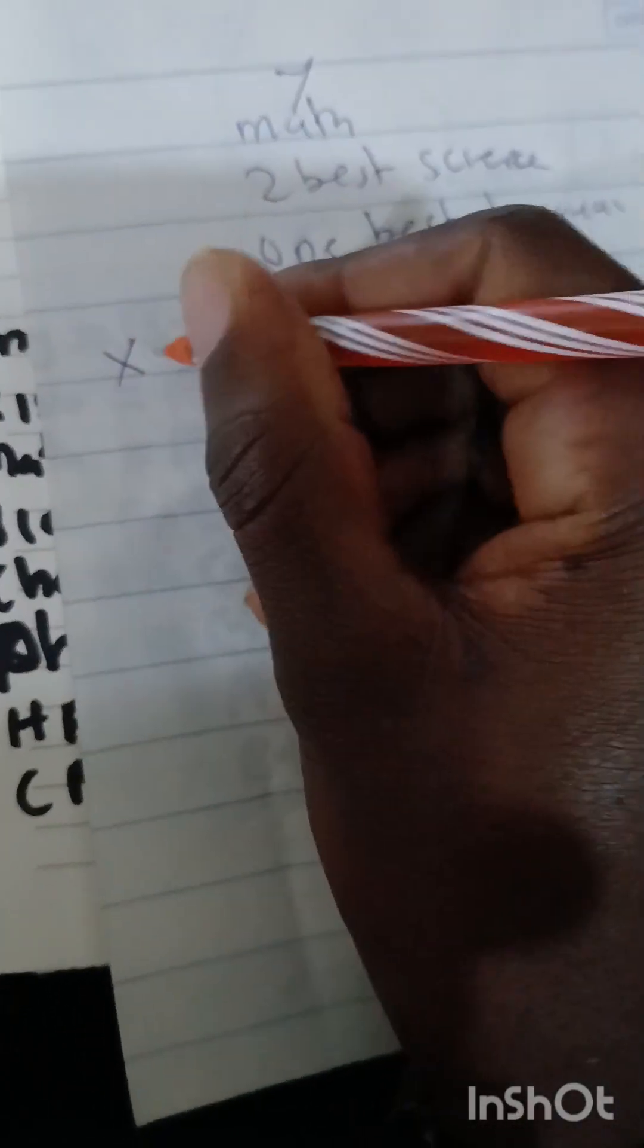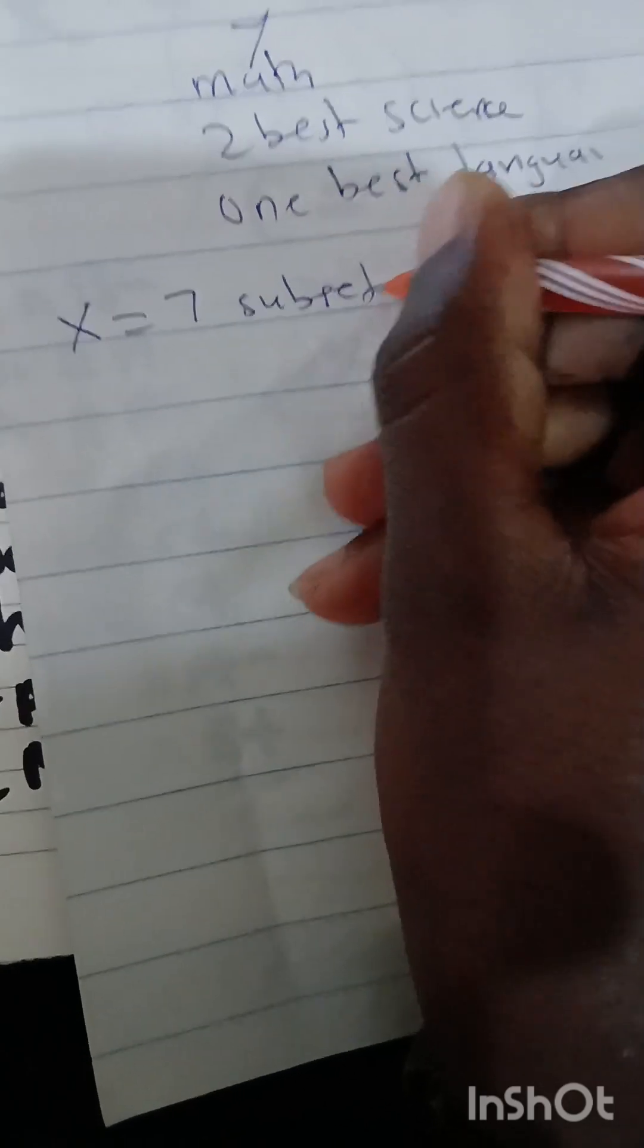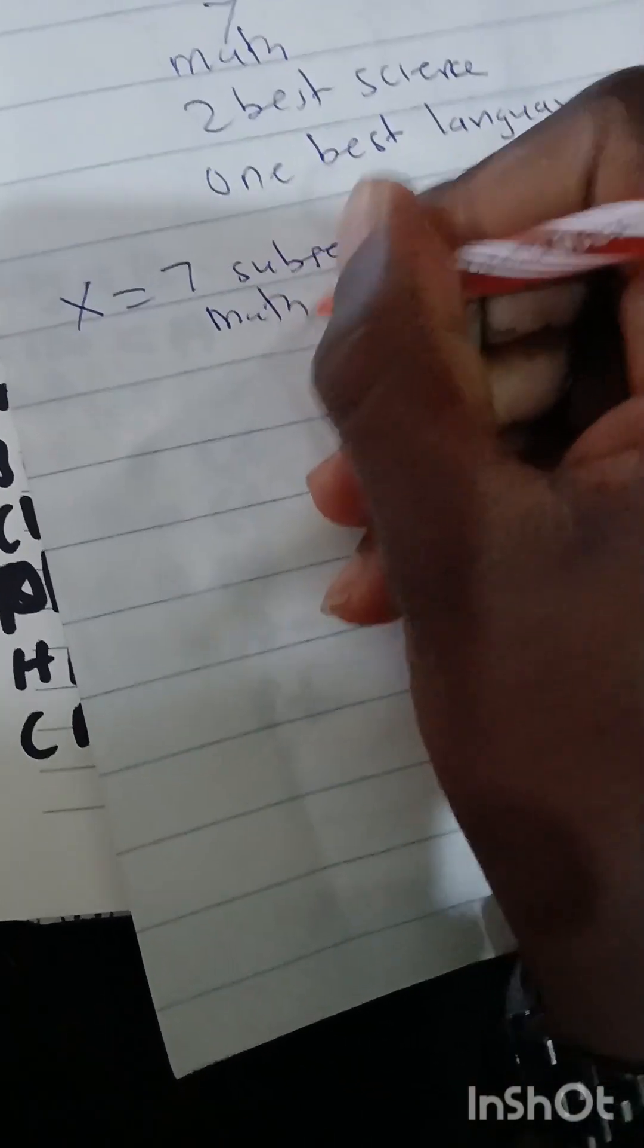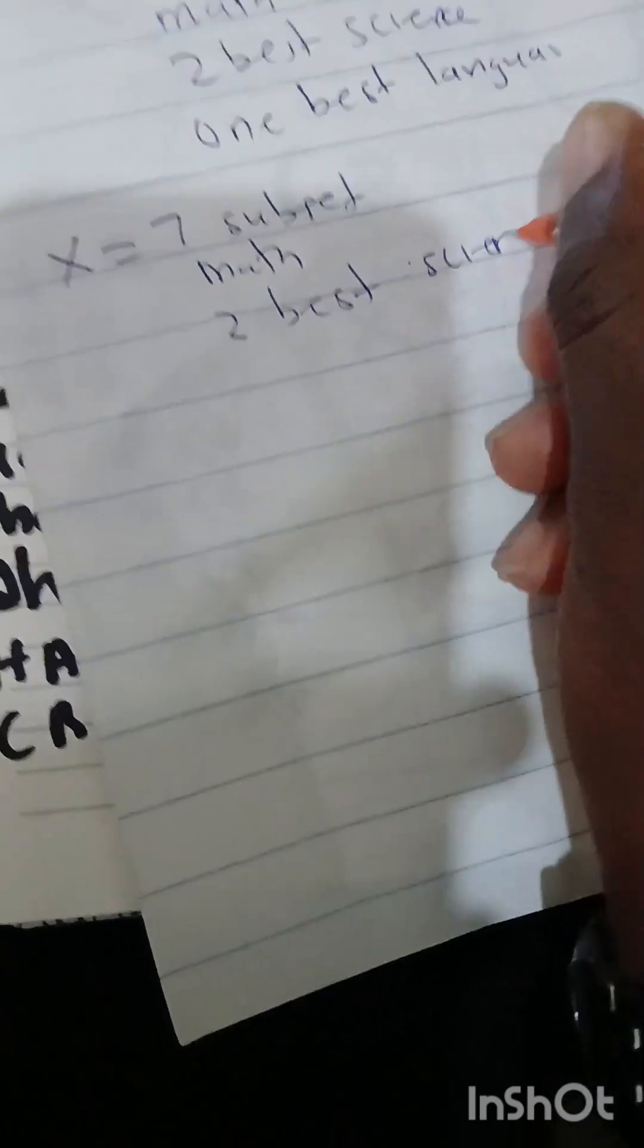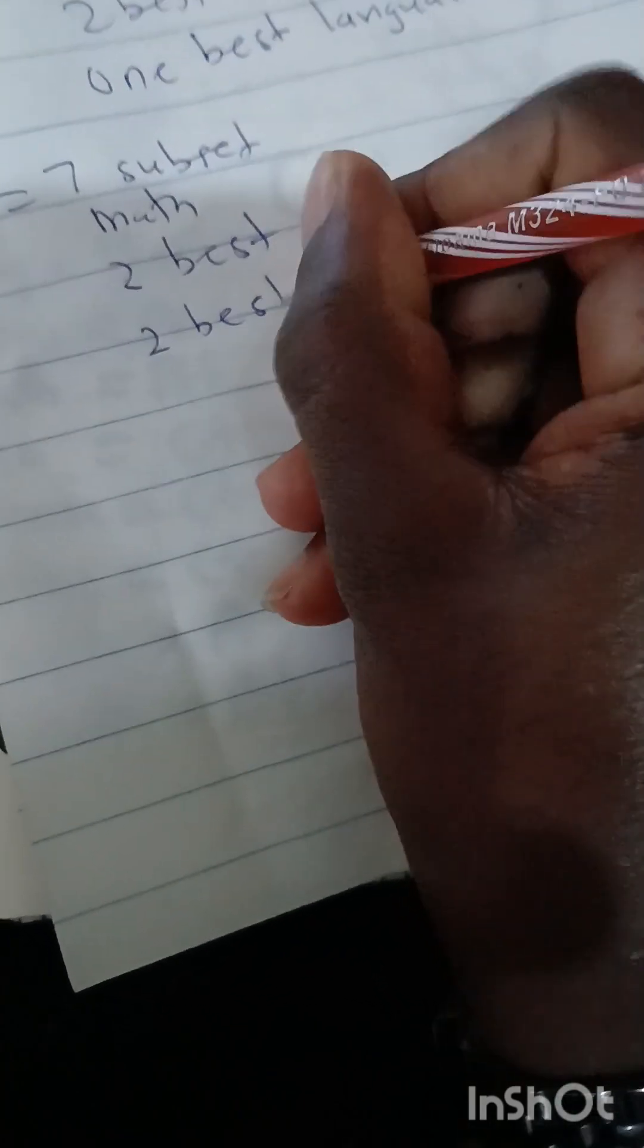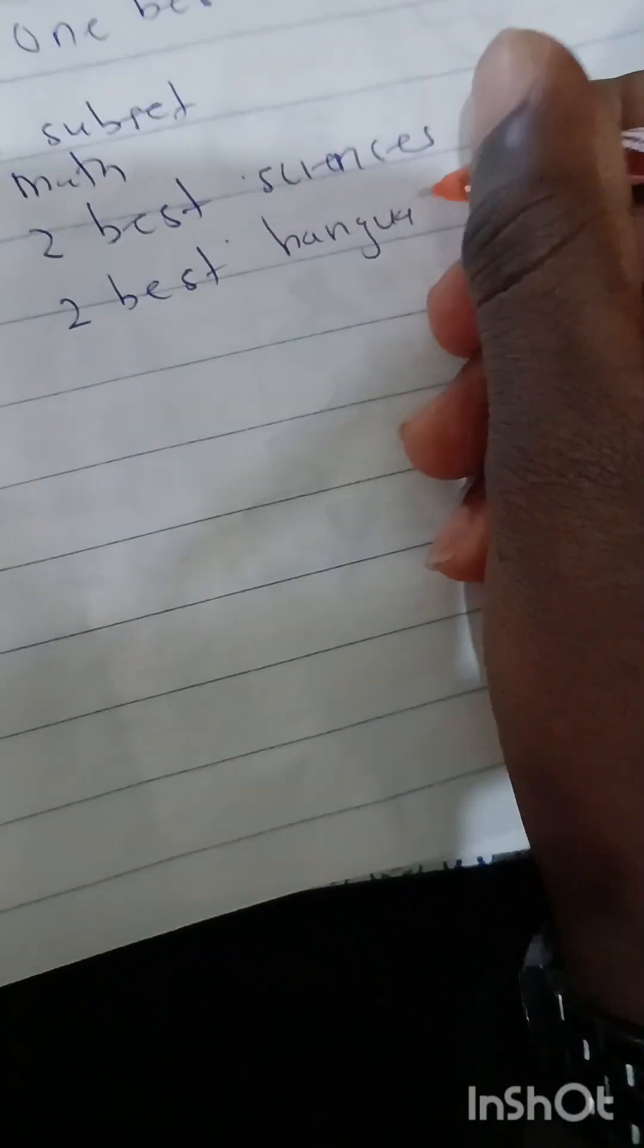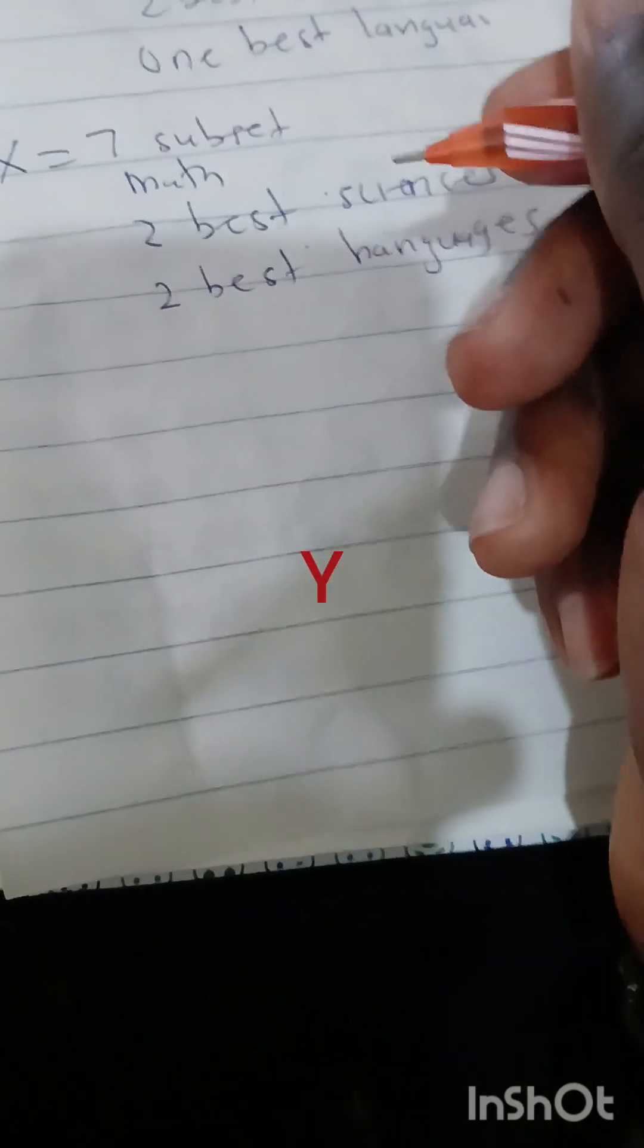Then for x, they consider seven subjects. So for x they pick math, two best sciences, two best languages. For example, a student could have done German and French, so you pick the best two languages.